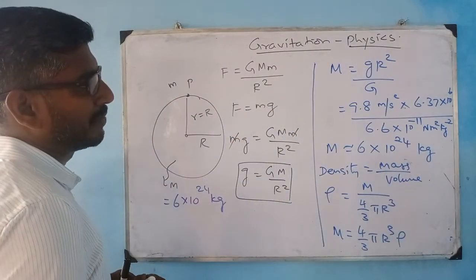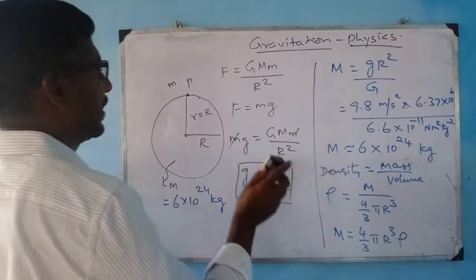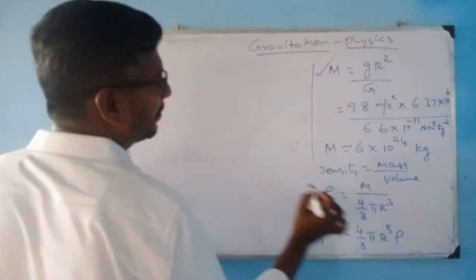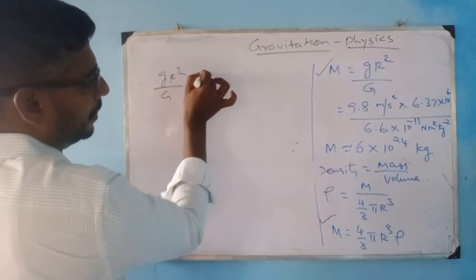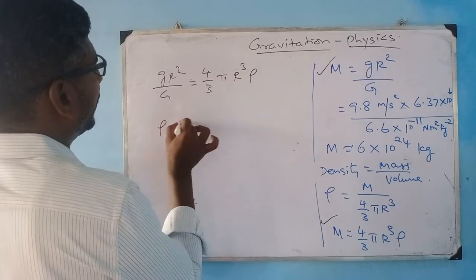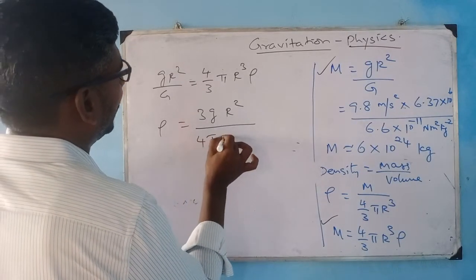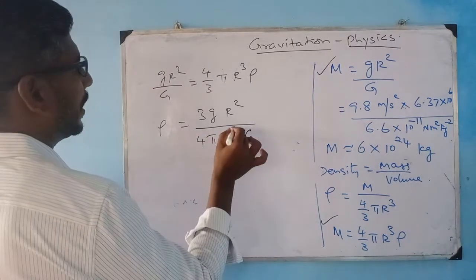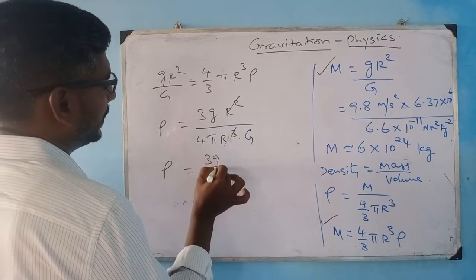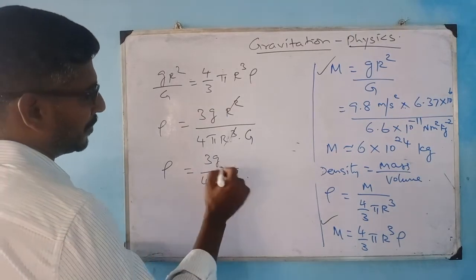Now I have the relation M = gR²/G and also M = (4/3)πR³ρ. Equating these two: gR²/G equals (4/3)πR³ρ. Solving, ρ equals 3g·R² divided by 4πR³·G, which simplifies to ρ equals 3g divided by 4πR·G.